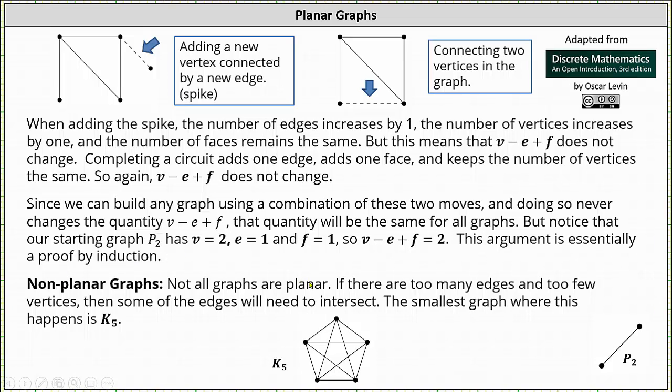Now, not all graphs are planar. If there are too many edges and too few vertices, then some of the edges will need to intersect. The smallest graph where this happens is K5 pictured here below. We'll talk more about non-planar graphs in the next lesson.